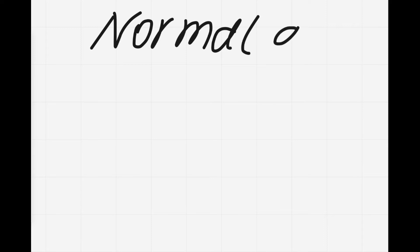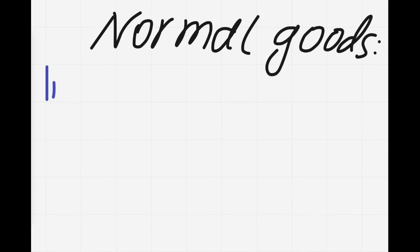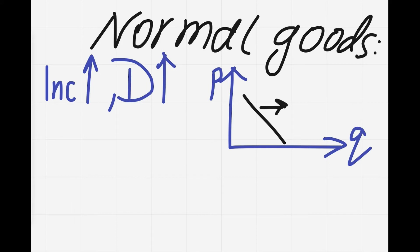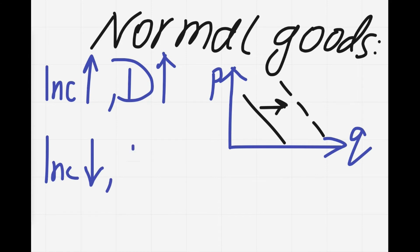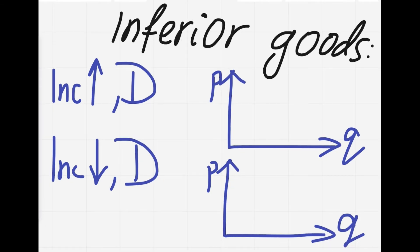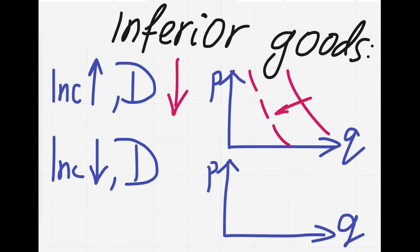This is the definition of normal goods: when income rises, demand for normal goods rises and the demand curve shifts to the right. And when income falls, demand for normal goods falls and the demand curve shifts to the left. And this is the definition of inferior goods: when income rises, demand falls. And when income falls, demand rises.